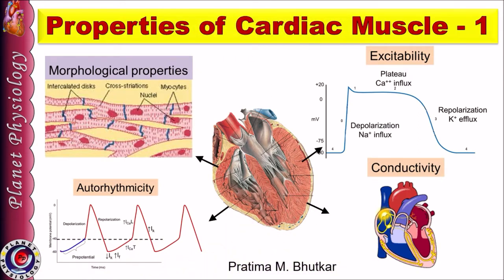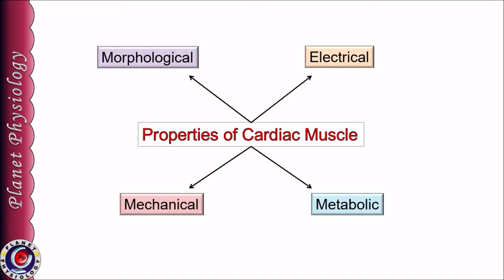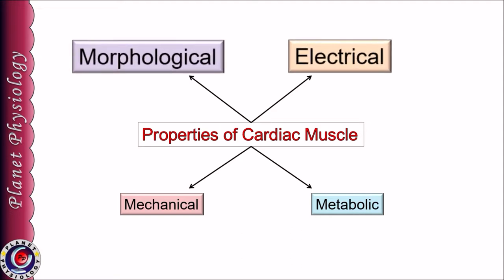Hi, this is Pratima from Planet Physiology. Today we shall discuss properties of cardiac muscle. Properties of cardiac muscle can be classified as morphological properties, electrical properties, mechanical properties, and metabolic properties. In this session we are going to study morphological and electrical properties, and in the next session we shall study mechanical and metabolic properties.